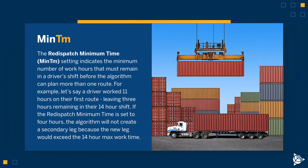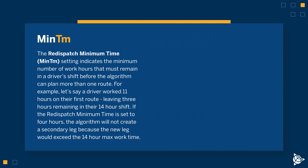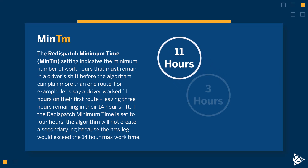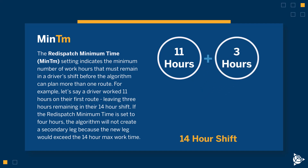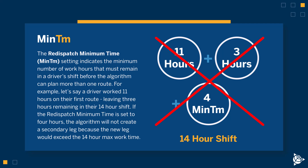The re-dispatch minimum time setting indicates the minimum number of work hours that must remain in a driver's shift before the algorithm can plan more than one route. For example, if a driver worked 11 hours on their first route, leaving 3 hours remaining in their 14-hour shift, and the re-dispatch minimum time is set to 4 hours, the algorithm will not create a secondary leg because the new leg would exceed the 14-hour max work time.